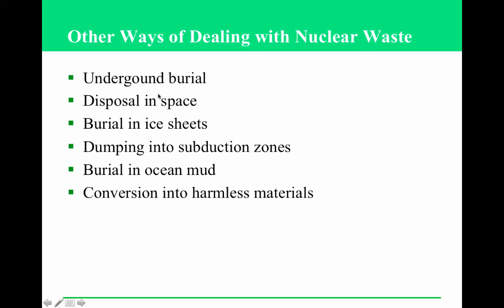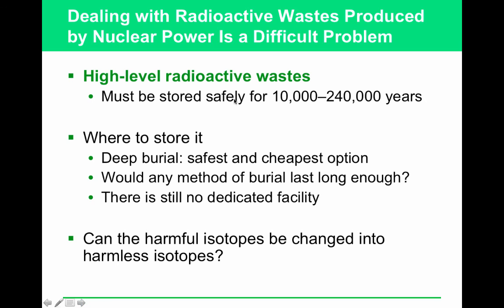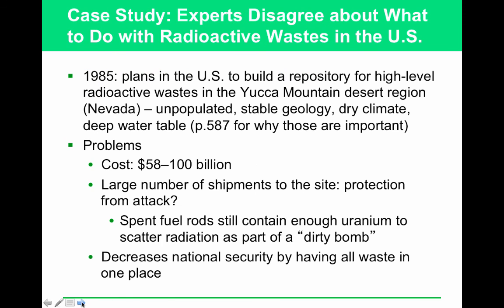Describe why Yucca Mountain is a good place to build a national nuclear waste storage facility. It is unpopulated, has relatively stable geology, is a dry climate, and has a deep water table. A major concern is the possibility of hijacking — if that's the only place for spent fuel rods, they'd travel by train and everybody would know, meaning they could be hijacked and turned into dirty bombs. The Yucca Mountain facility hasn't happened, and given how much it would cost, it's uncertain it will.